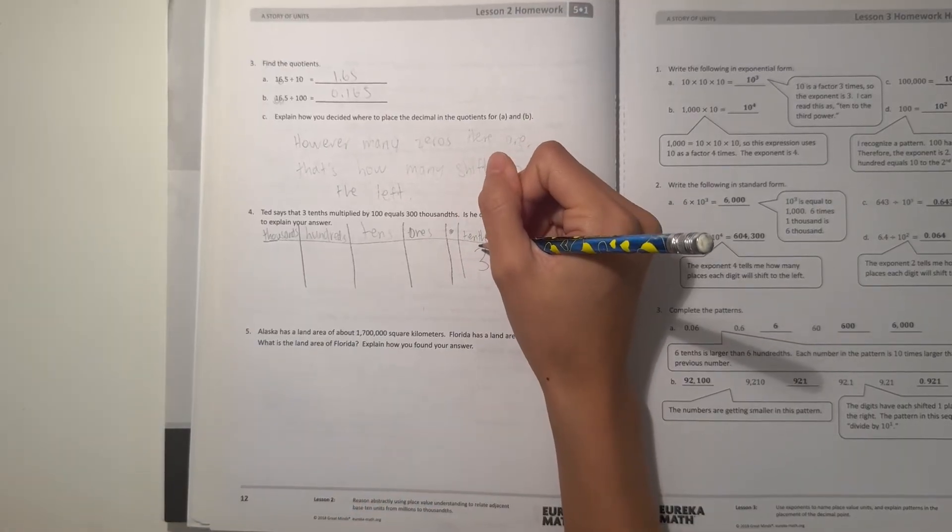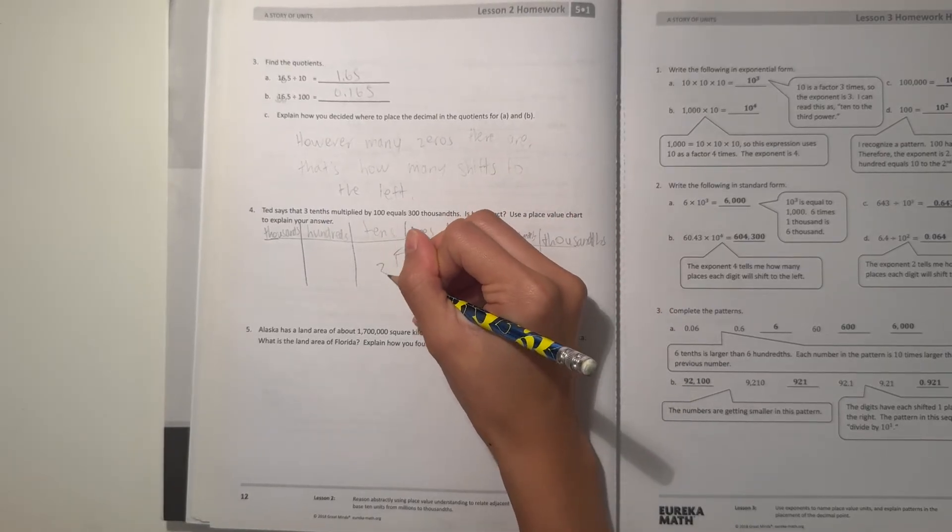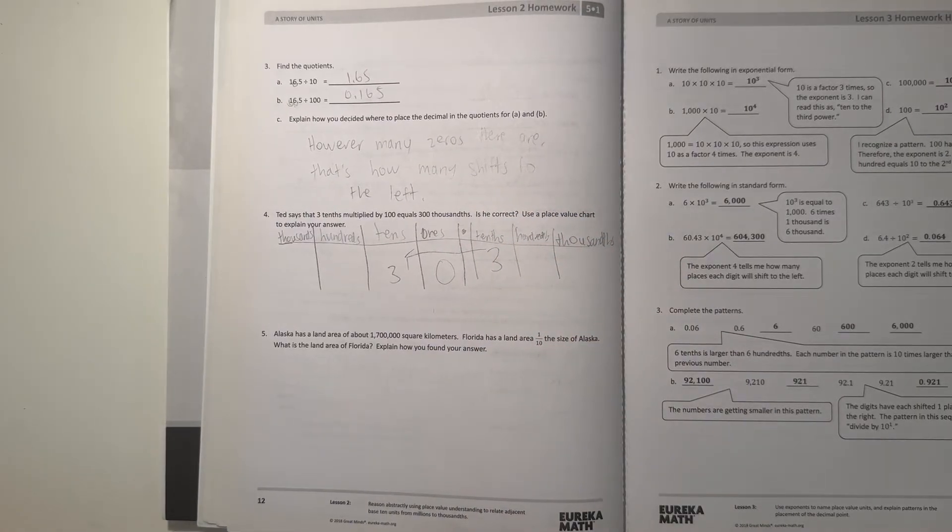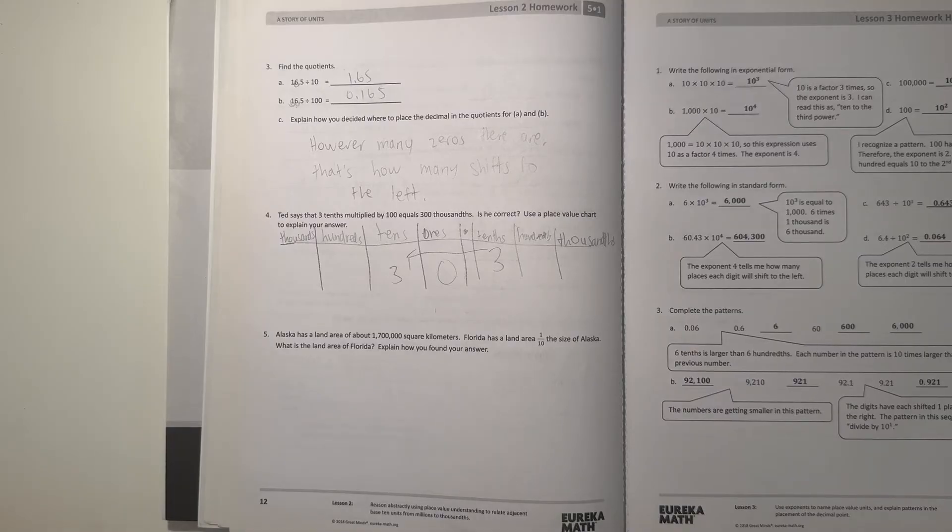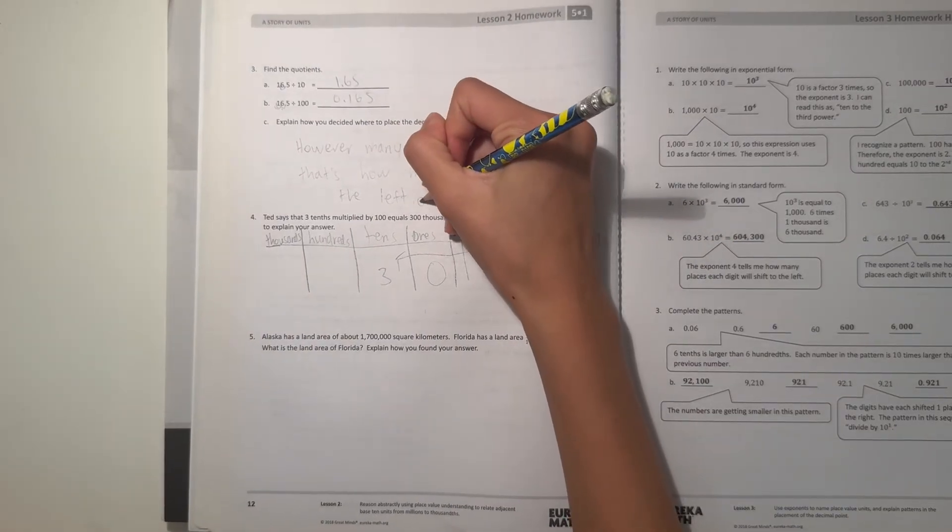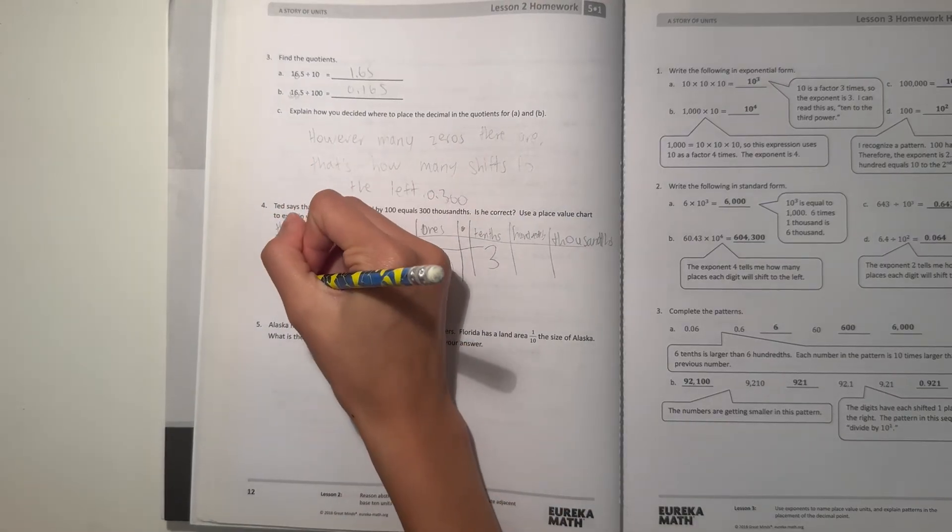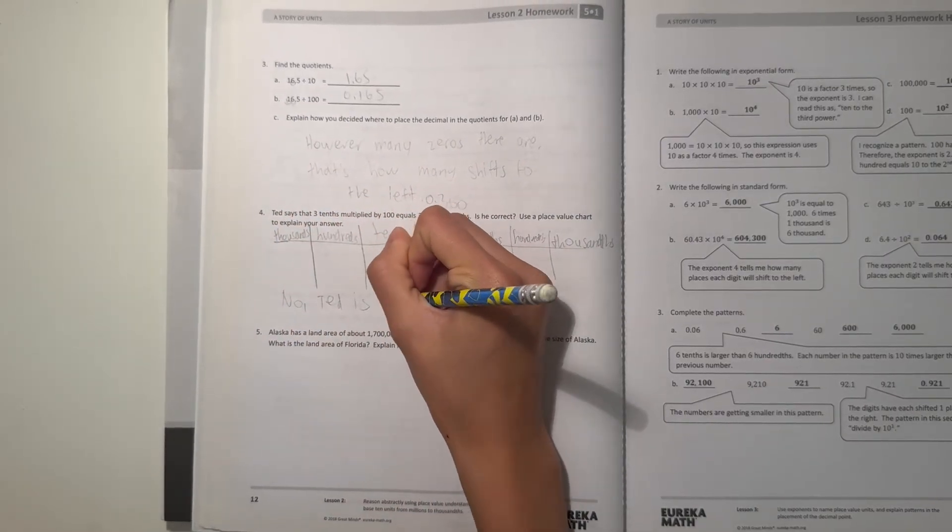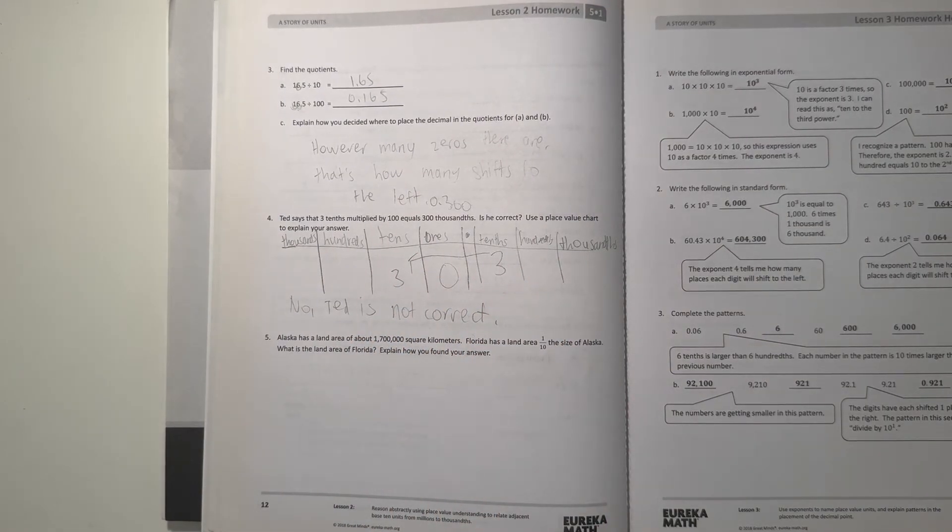Alright, so Ted says that 3 tenths, that would be 0.3, multiplied by 100 equals 300 thousandths. So times 100 that's two places to the right, so that'd be 30. And he says it equals 300 thousandths, but as you can obviously see it equals 3 tenths which is 30, and that's definitely not 300 thousandths. Also, 300 thousandths is actually three tenths, so he is incorrect. So Ted is not correct and that is the place value chart to show our answer.